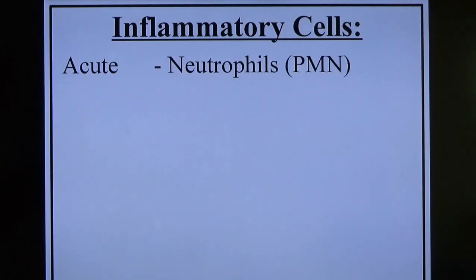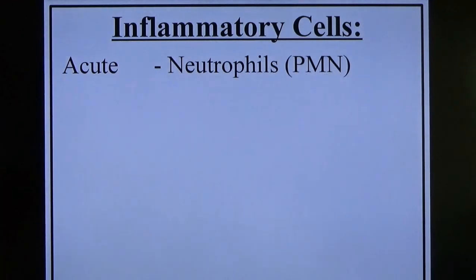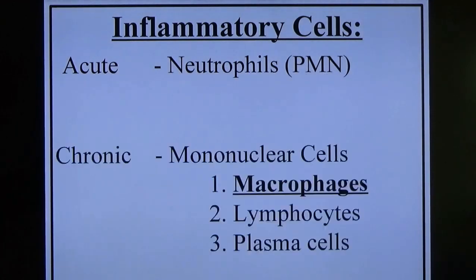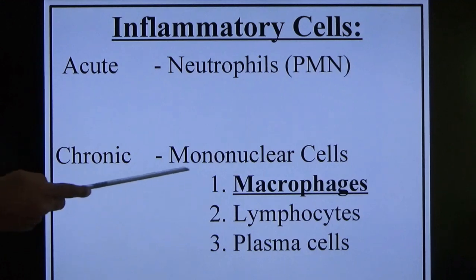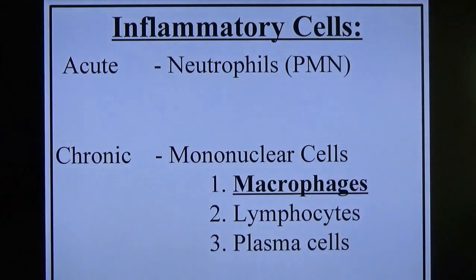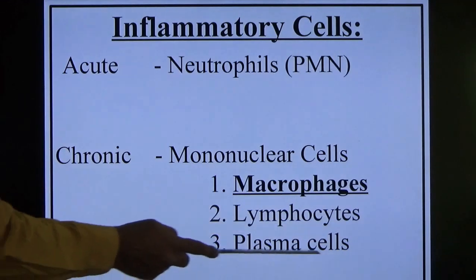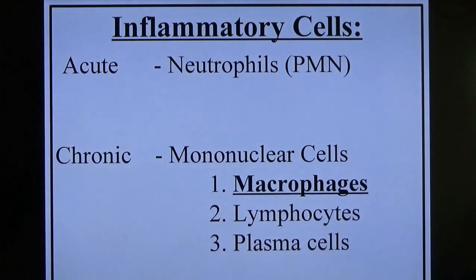What are the inflammatory cells? In acute inflammation, we studied the neutrophil — polymorphonuclear. In chronic inflammation, what we study are the mononuclear cells. Mononuclear cells means macrophages, lymphocytes, and plasma cells.